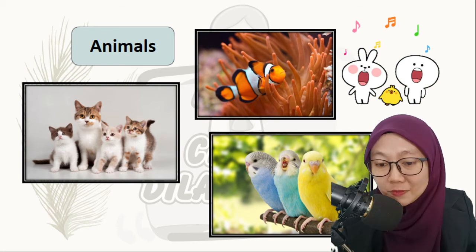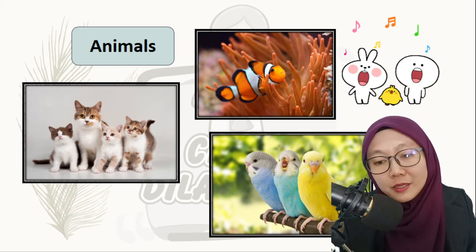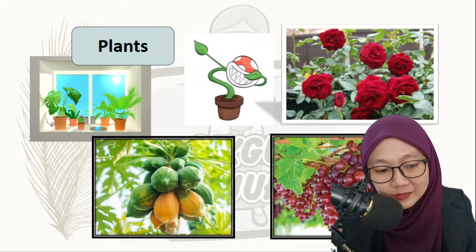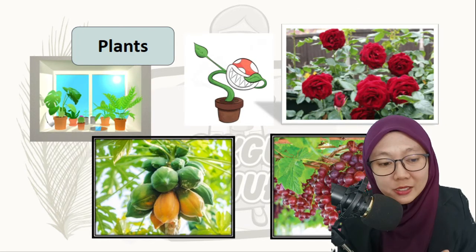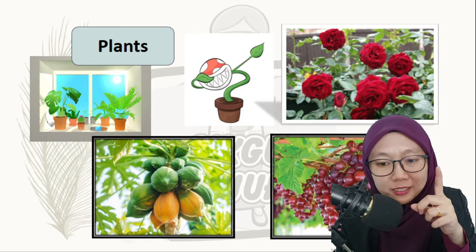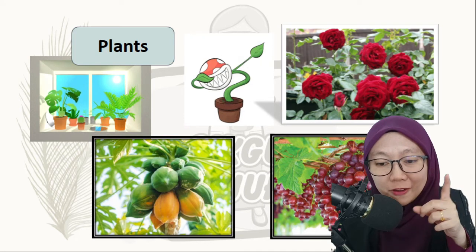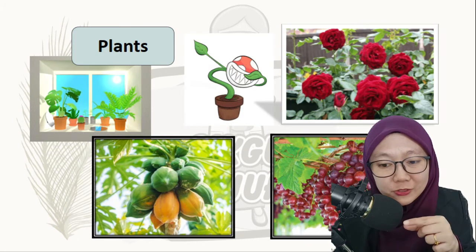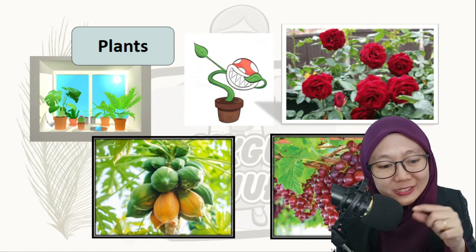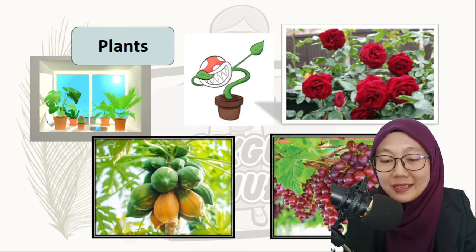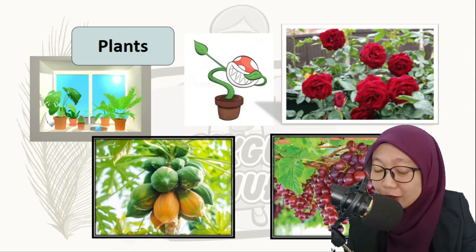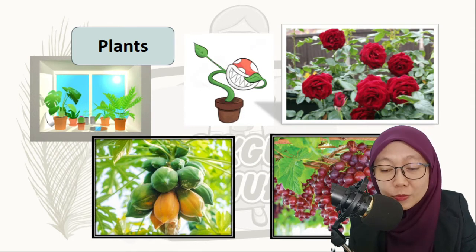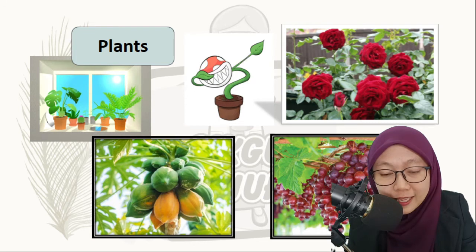Living things can be humans, can be animals, and living things also can be a plant. For example, that is a flowering plant. We have a fruit like a papaya, like a grape. We have a lot of other types of fruit. So that's also a plant, and a plant is a living thing.